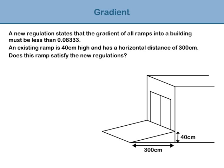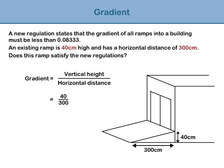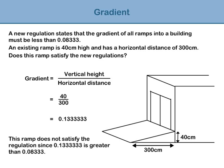Write down the formula: gradient equals vertical height over horizontal distance. Substitute 40 for the vertical height and 300 for the horizontal distance. Divide 40 by 300 to get 0.13333. This ramp does not satisfy the regulation, since its gradient of 0.13333 is greater than the regulation gradient of 0.08333.